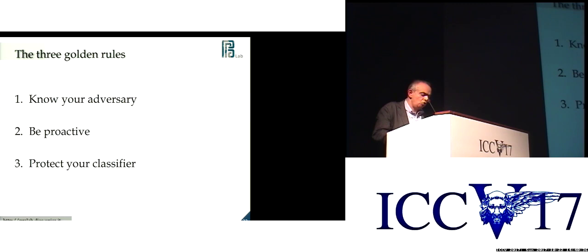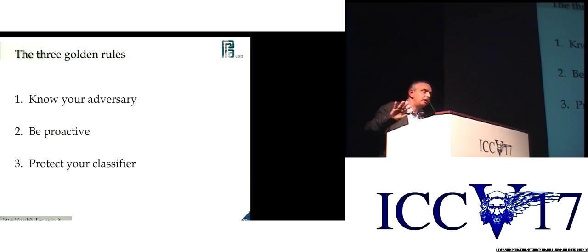If you look at the state of the art in adversarial machine learning — a field whose first paper was published in 2004 — you can summarize good design practice with three golden rules: first, know your adversary; second, be proactive in the design of your system; and third, design countermeasures against possible attacks. These rules summarize what you should do as a designer of a machine learning system for adversarial applications.